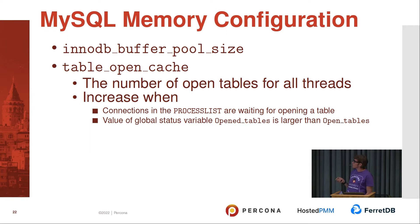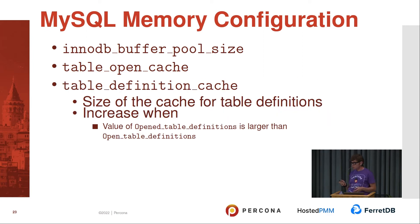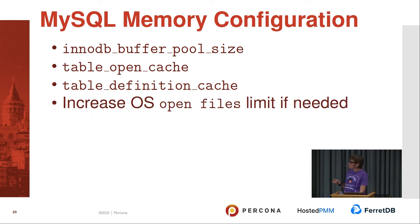You'll see connections in the process list with status 'waiting for opening tables'. If the global status variable 'opening_tables' is larger than 'open_tables', and you're not doing FLUSH TABLES or forcefully closing tables, that's a symptom you need to increase table_open_cache. Table definition cache is different — it caches table definitions, not descriptors. Opening table definitions should not grow much larger than open table definitions. You may need to increase the OS open files limit if needed.